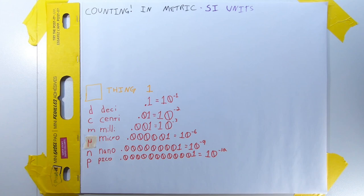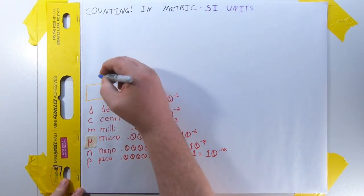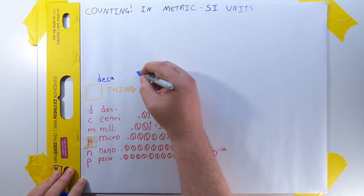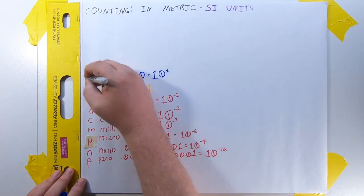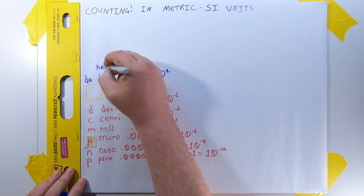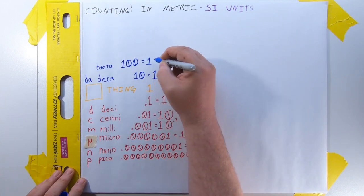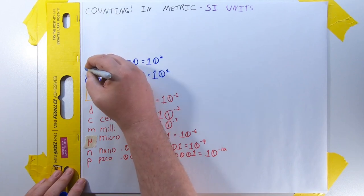Now let's talk about quantities greater than one. If you have tens of a thing, or 10 to the first, you have a decathing with the prefix d-a in lowercase. It's almost never used. If you have hundreds of a thing, or 10 to the second things, you have a hectothing with lowercase h prefix. Never use this.